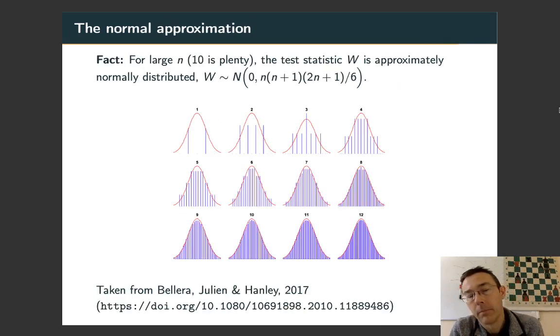So, this picture is taken from an article by Ballar, Julian, and Hanley in 2017 showing normal distributions N of 0 comma N N plus 1 2N plus 1 over 6 and the discrete probability distribution for the test statistic W. And you can see that you don't have to get very large values of N before you start getting a pretty good fit to that normal distribution. By the time we get to N equals 10, you're in really good shape and you can convince yourself by looking at this picture that slightly smaller values will be okay as well.